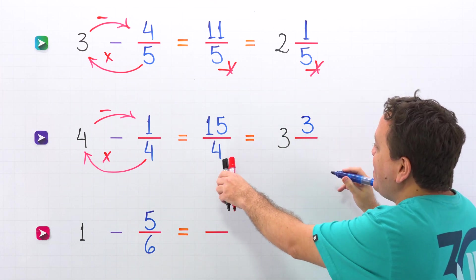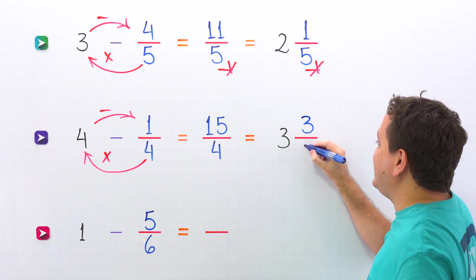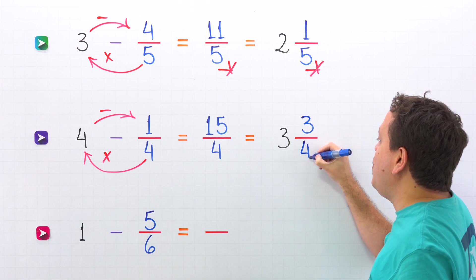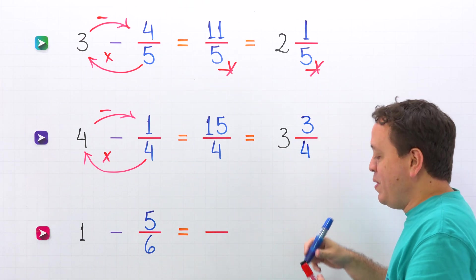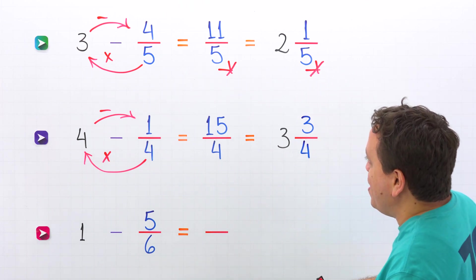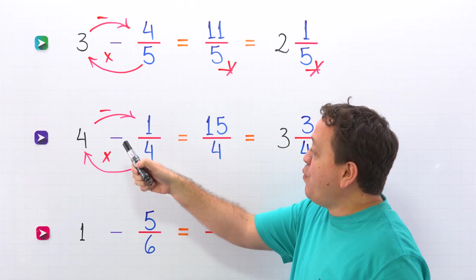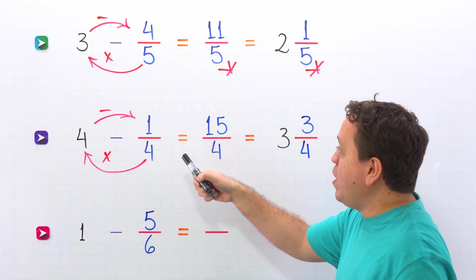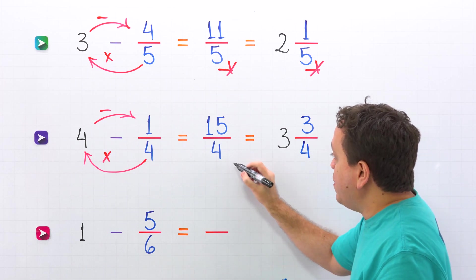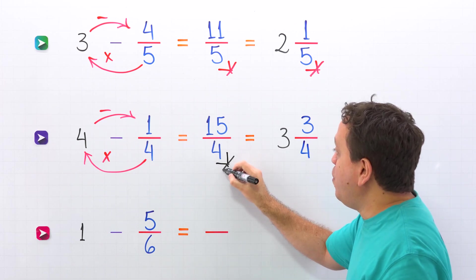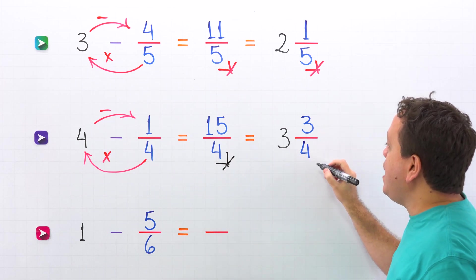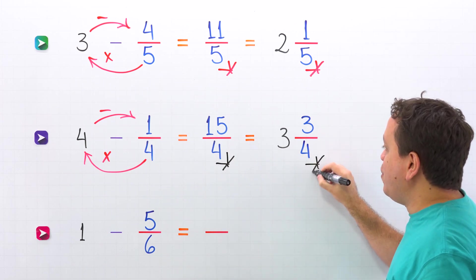And then the denominator stays the same — 4 goes over here. In that way, 4 minus 1 fourth gives us 15 fourths, or 3 and 3 fourths.